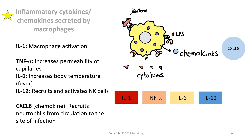Here is a review of the inflammatory cytokines and chemokines secreted by macrophages. In particular, we will focus on TNF-alpha and CXCL8. TNF-alpha increases permeability of the capillaries, making them more leaky, so immune cells — in particular monocyte macrophages and neutrophils — will more easily reach the site of infection. Other inflammatory mediators will also leak out from the capillary. CXCL8, being a chemokine, has a huge role in recruiting neutrophils from the circulation to the site of infection. We're going to look at the mechanisms of how this chemokine does that.